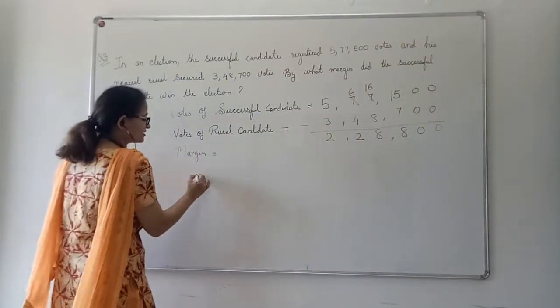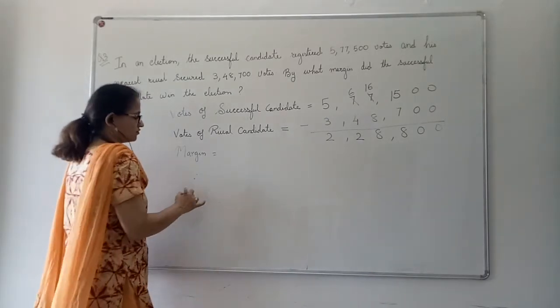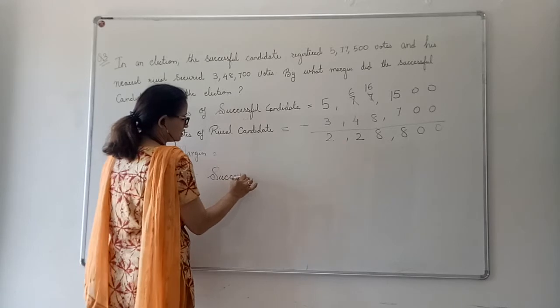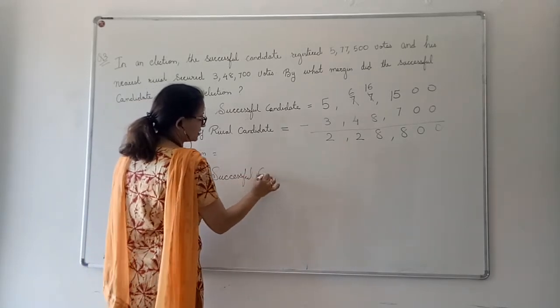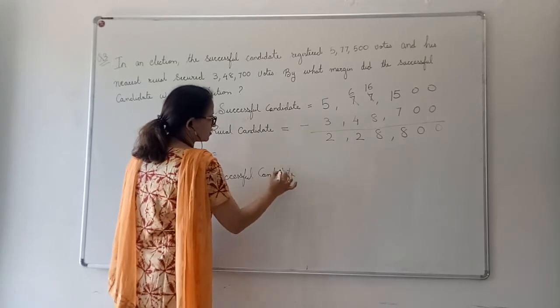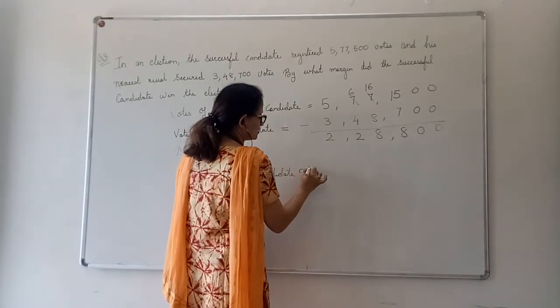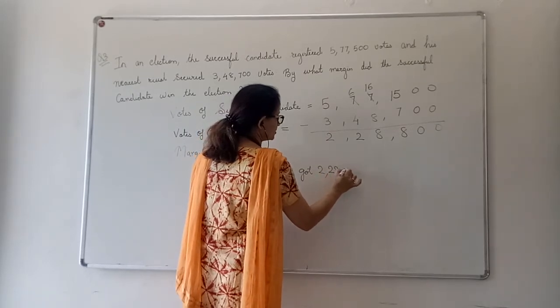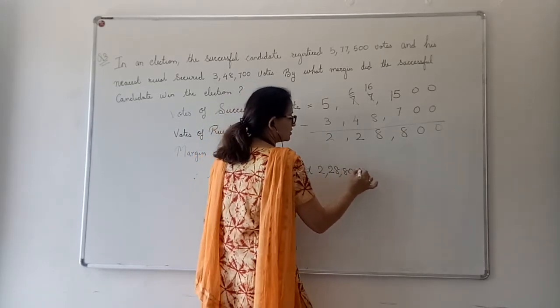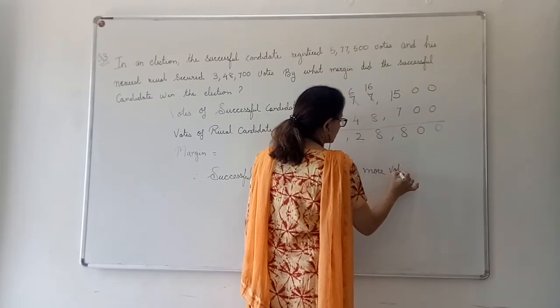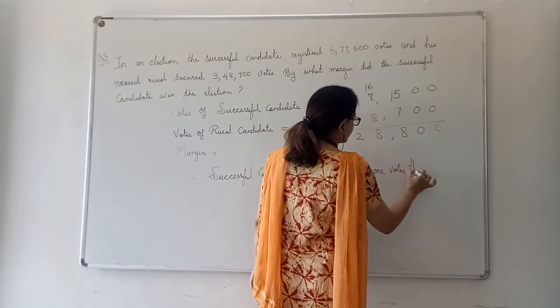So, how we will write the concluding statement? Therefore, successful candidate got 2,28,800 more votes than his rival.